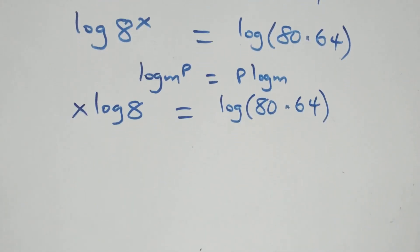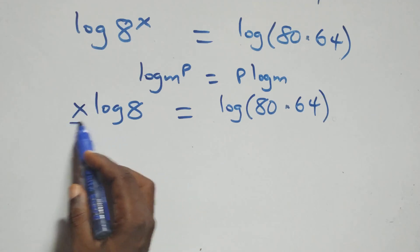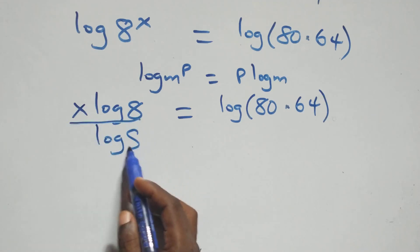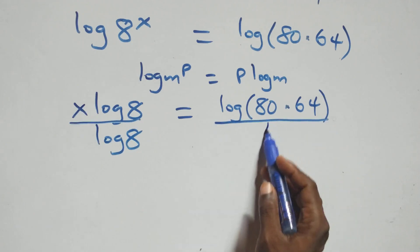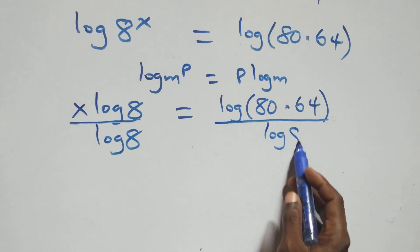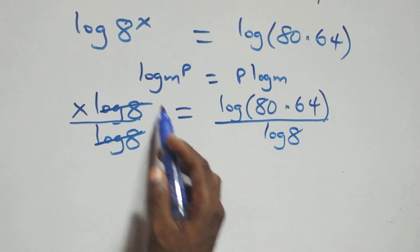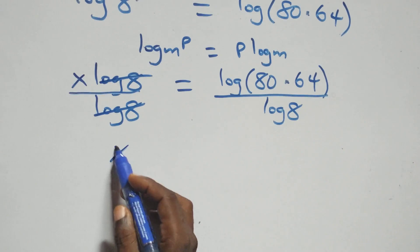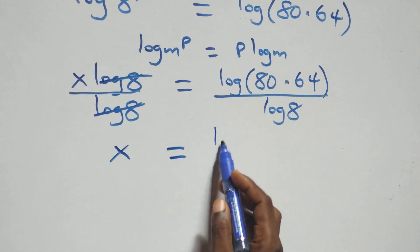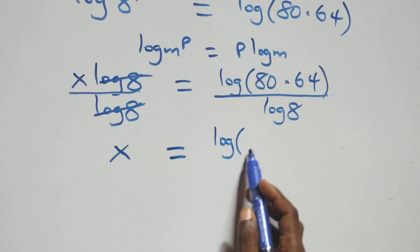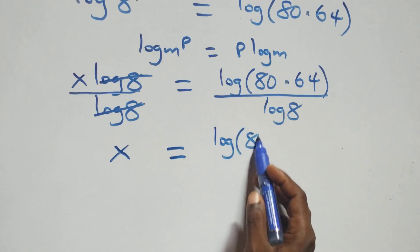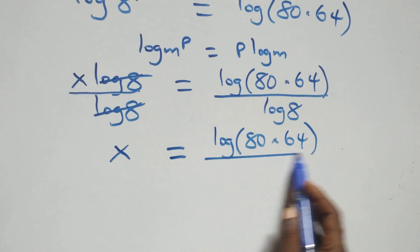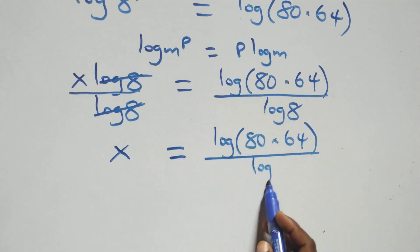Then from here, we divide both sides by log 8. Dividing this side by log 8 and also this side by log 8, the log 8 terms cancel each other, and we have x equals log(80 times 64) over log 8.